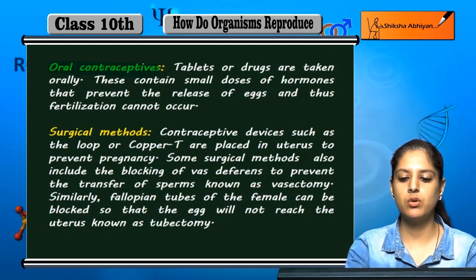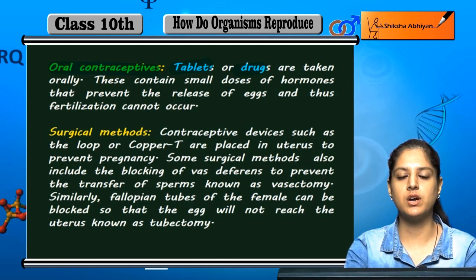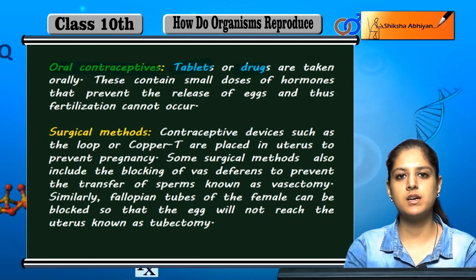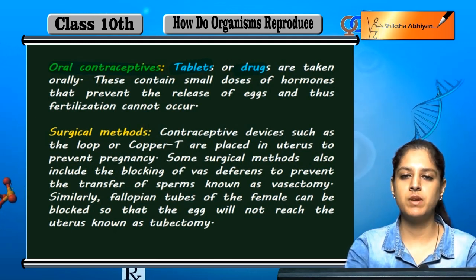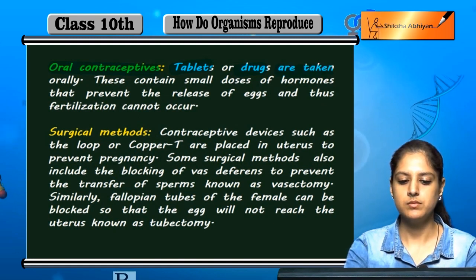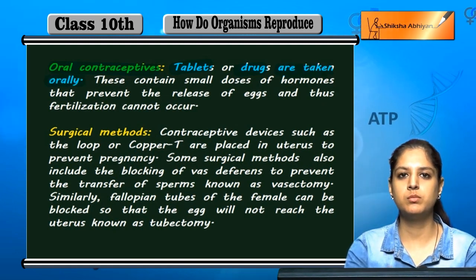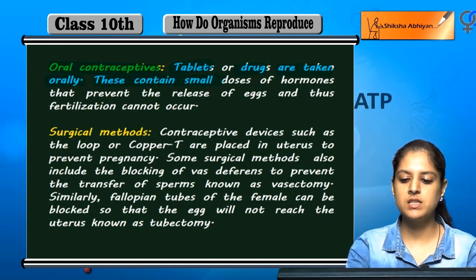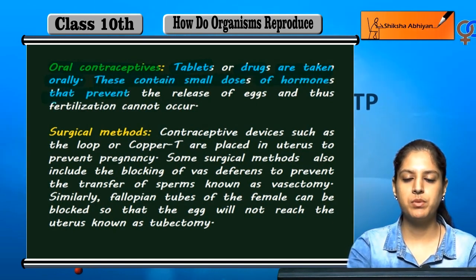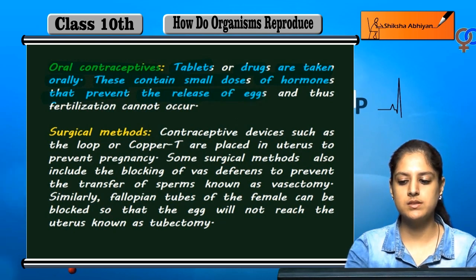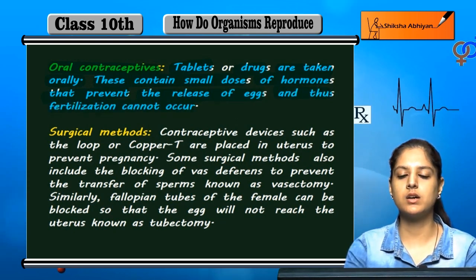Next are oral contraceptives. Oral means taken in the form of tablets or drugs by mouth. These contain small doses of hormones that prevent the release of eggs. When the egg is not released, fertilization cannot occur.